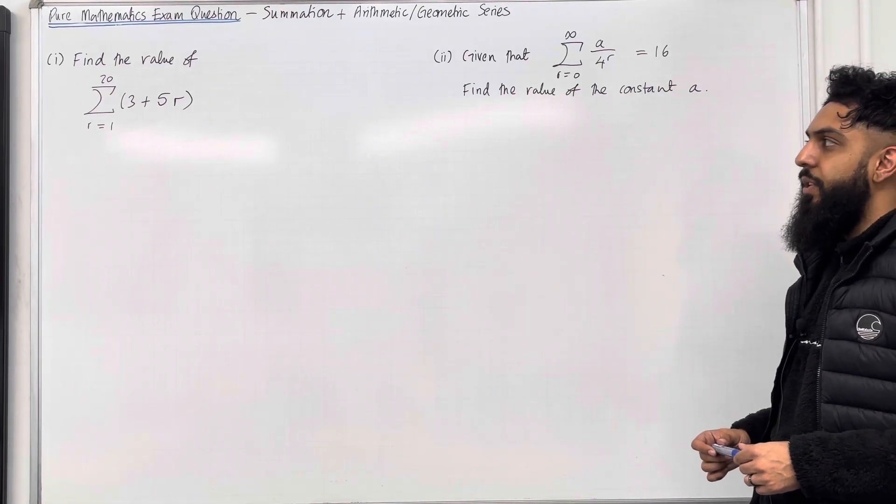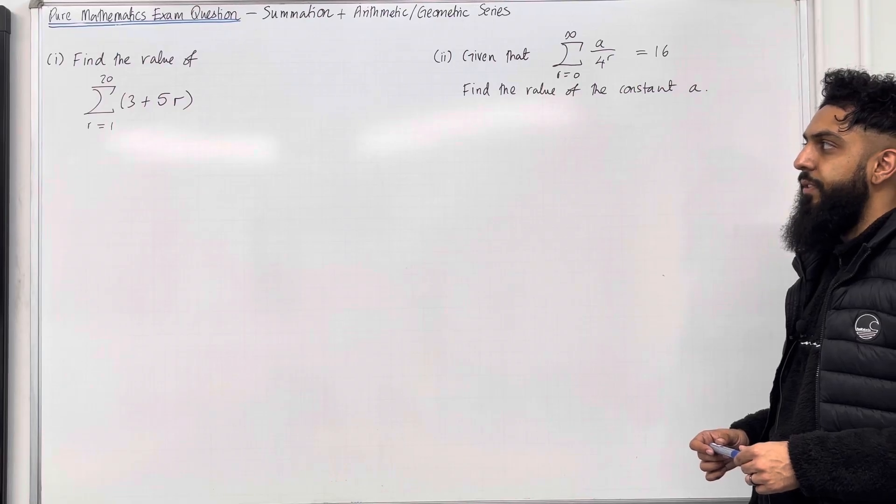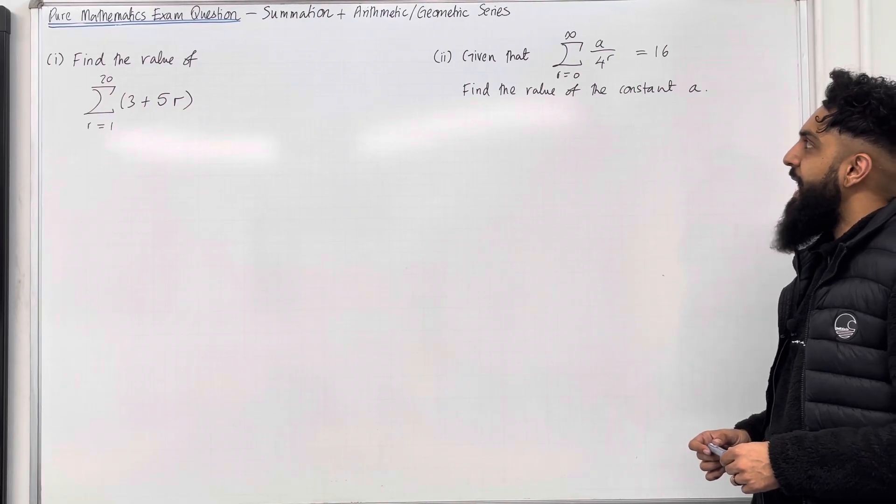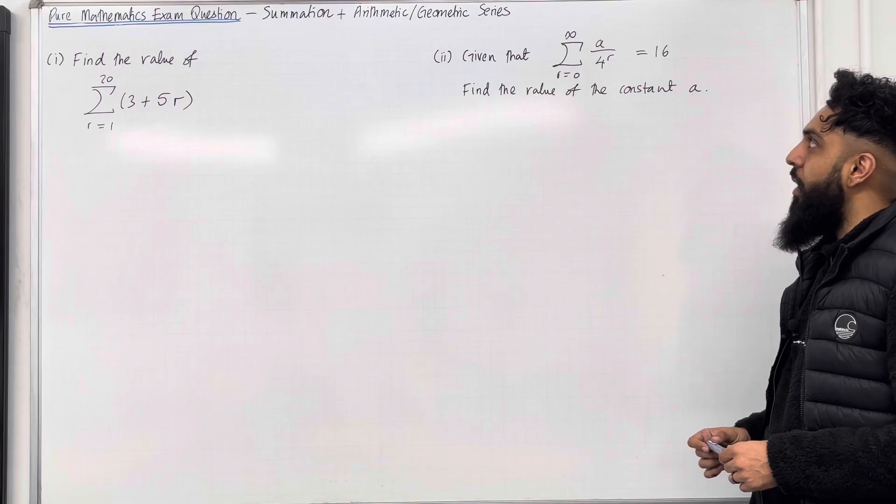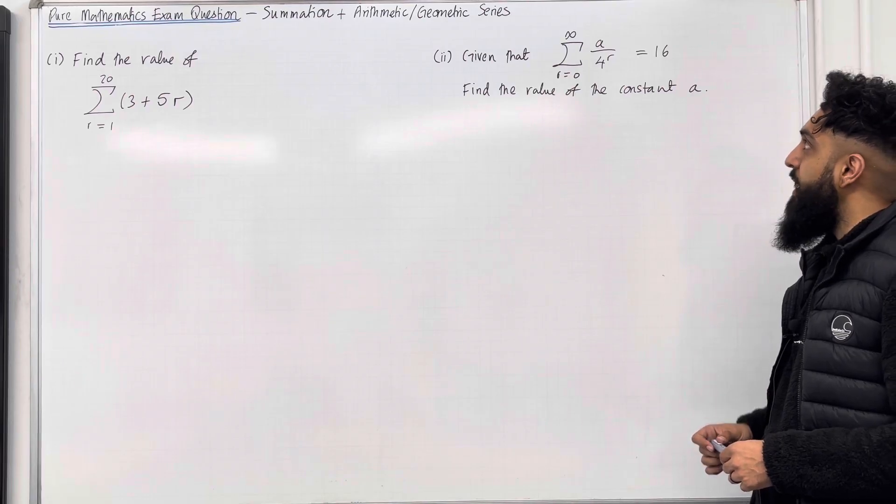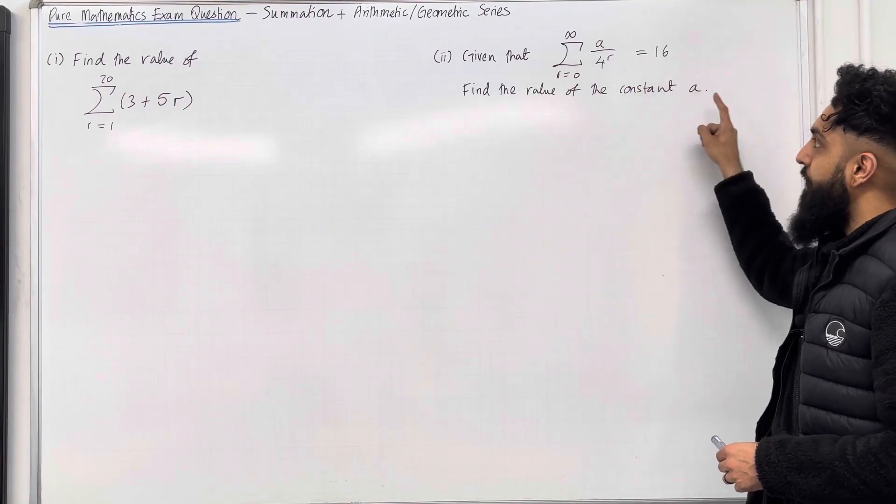Part 1: find the value of the sum from r equals 1 to 20 of 3 plus 5r. Part 2: given that the sum from r equals 0 to infinity of a over 4 to the power r is equal to 16, find the value of the constant a.